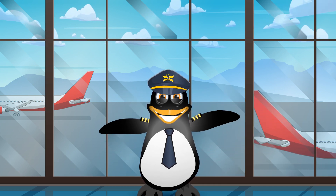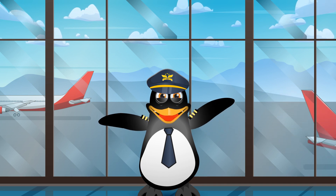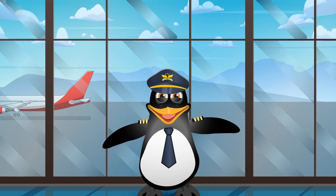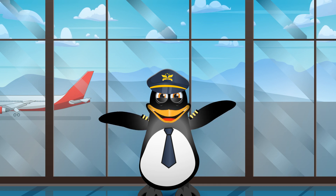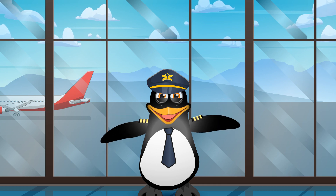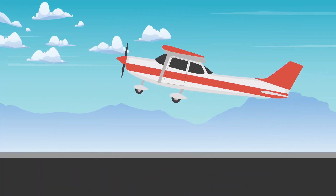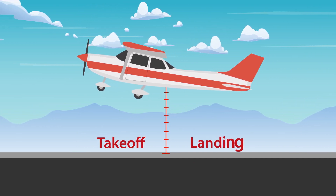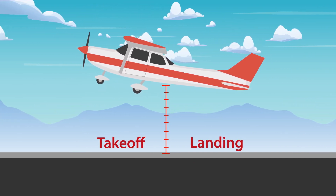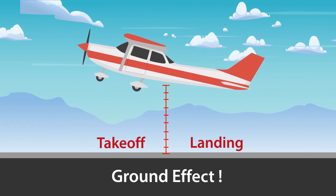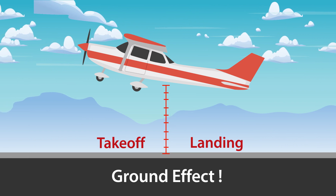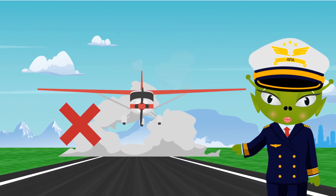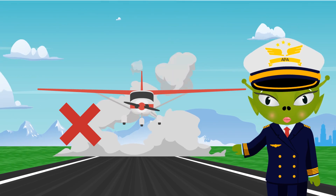Have you ever wondered why, when you come in for a landing, the plane doesn't want to touch down right away? This is because of ground effect. When an aircraft is within a wingspan from a surface, like during takeoff and landing, it experiences a phenomenon known as ground effect. This effect has the feeling like you are floating on a cushion of air.